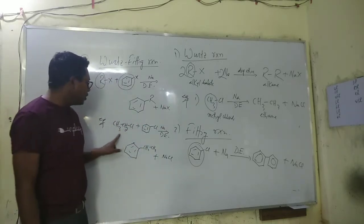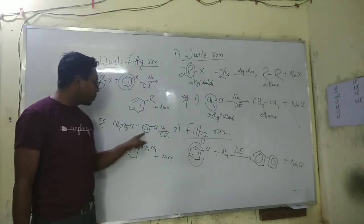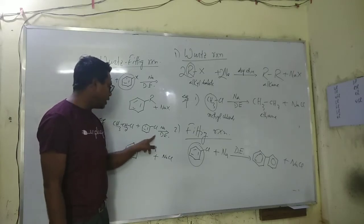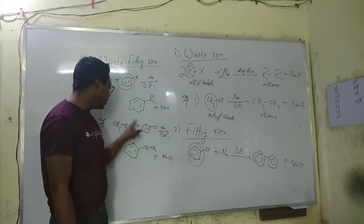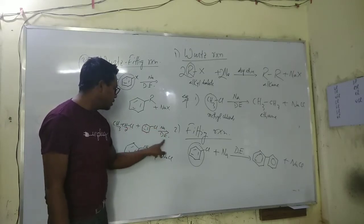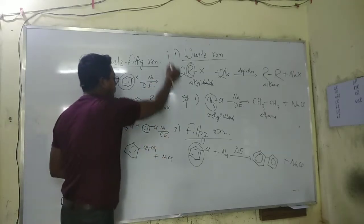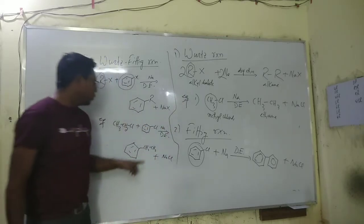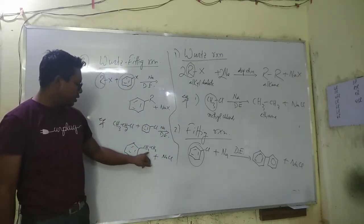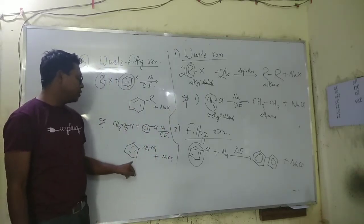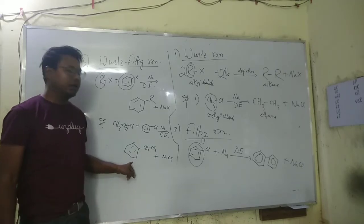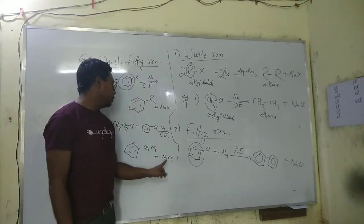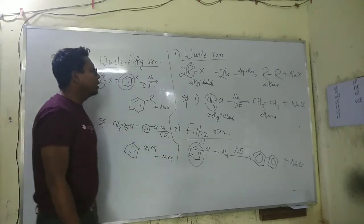For example, ethyl chloride reacts with phenyl chloride and sodium in the presence of dry ether, and we will get ethyl benzene as the product. So chlorobenzene is the aryl halide used here.